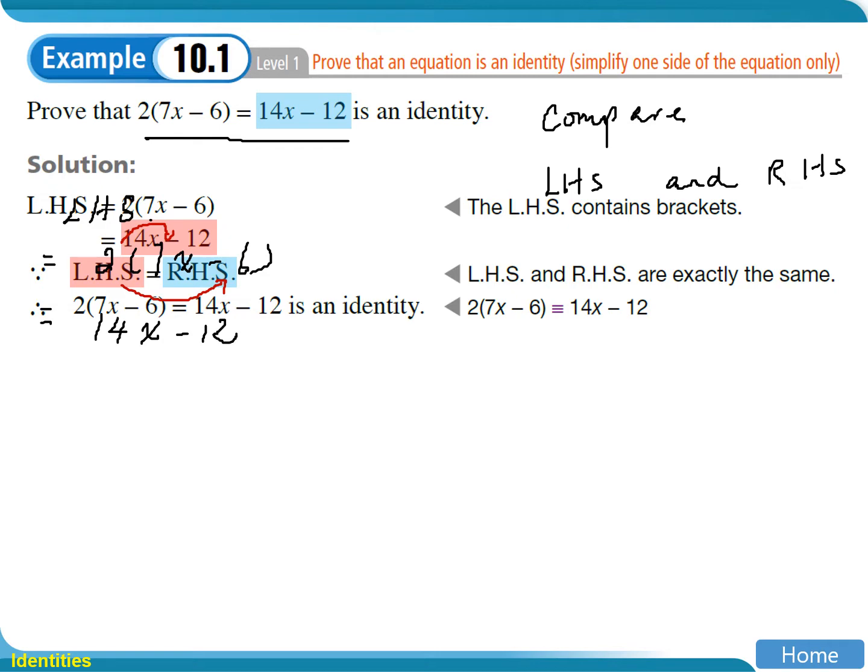After you have done the simplification, you can look at the right-hand side again and see whether it also needs to be simplified. If not, then you can just compare.